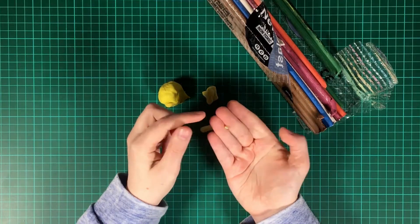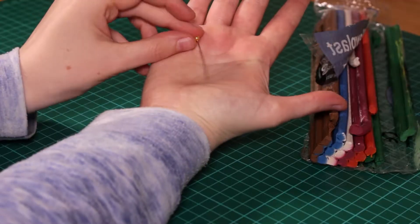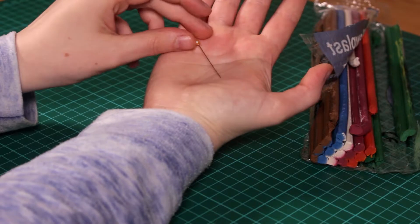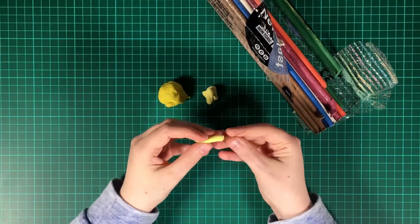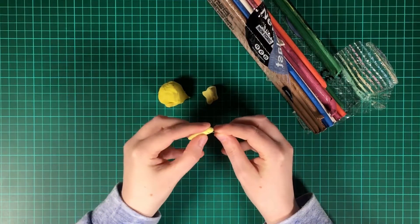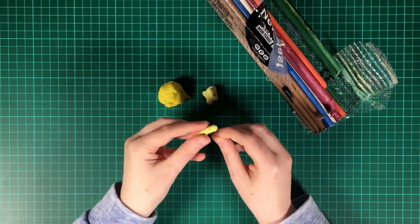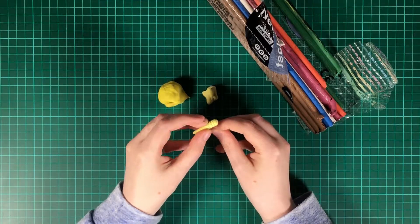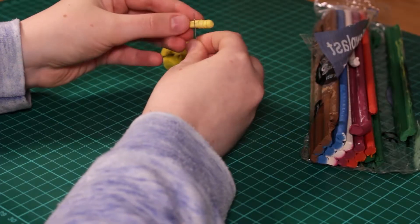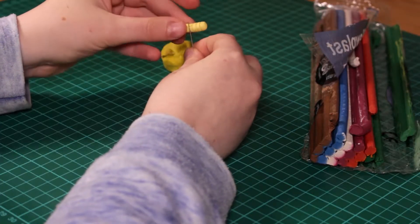To add some detail on my maggot, I'm using just a normal household pin as you can see here, and basically it's one of the cheapest and best tools in my opinion. Here you can see I am making lines around the body of the maggot. This is to create the sections of a maggot.